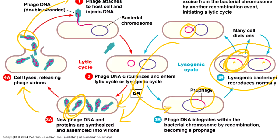A couple of key things about lysogeny: when the prophage integrates, it's somewhat random, which means it can interrupt a gene, and if that gene is essential it can kill the cell. Also, DNA polymerase makes mistakes during replication, so mutations accumulate. Depending on how many rounds of division the phage stays in the prophage state, it may pick up mutations that inactivate it entirely or just inactivate its ability to ever induce and excise itself. These are called cryptic phage — phage that have lysogenized the host and then through mutation lost their ability to excise and move on.